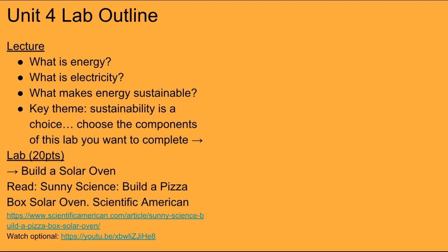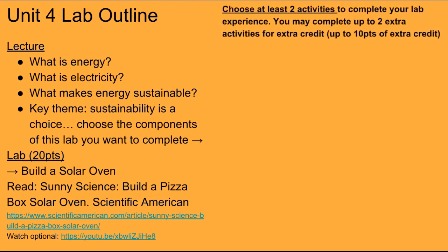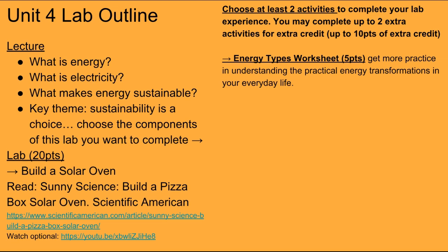That being said, you have to do the main experiential lab component, which is to build a solar oven. To round out your learning experience, you can choose at least two of these activities — and you may do extra ones. This is my first time teaching environmental science online for Colorado Mountain College, and I did not make the field trip required, so I want to create opportunities for people to gather points for the unit five lab without feeling forced to go on a field trip.